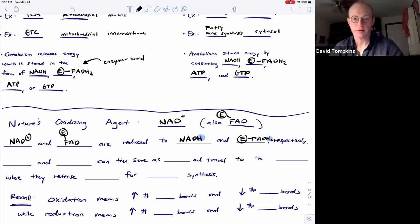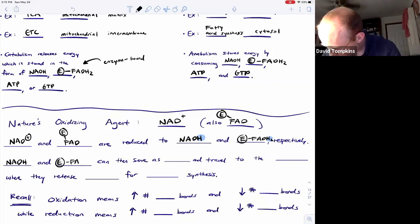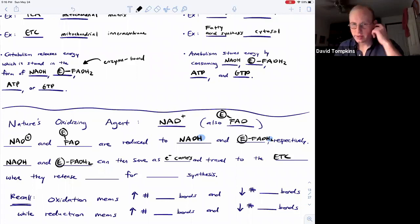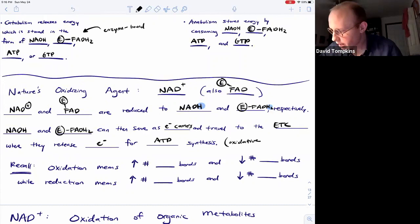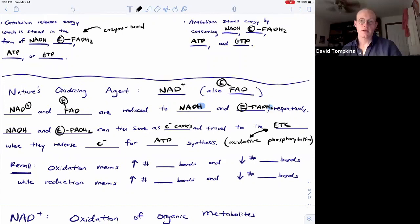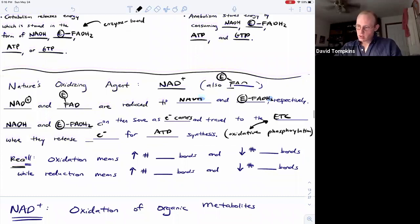Where they now have extra hydrogens and they have been reduced, so the organic substrate that the hydrogens were stolen from have been oxidized. And now these reduced electron carriers are going to serve as such and take electron density to the electron transport chain at the inner membrane of the mitochondria where they will release electrons for ATP synthesis to occur. That process where we oxidize them back to their oxidized form and synthesize ATP as a byproduct is known as oxidative phosphorylation. So electron transport and oxidative phosphorylation are linked in the mitochondria.